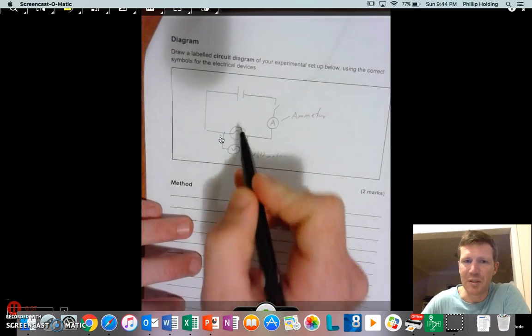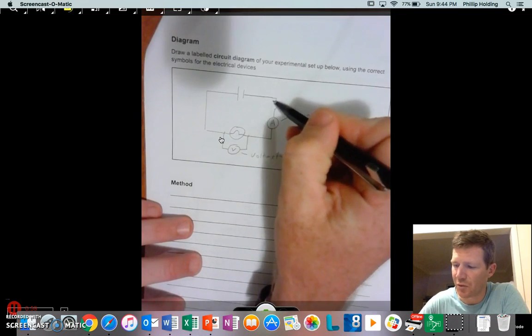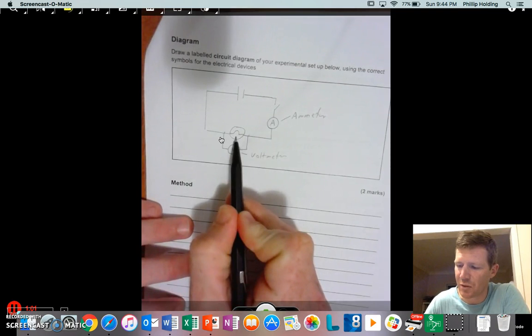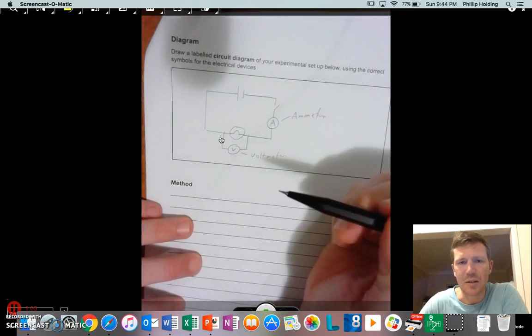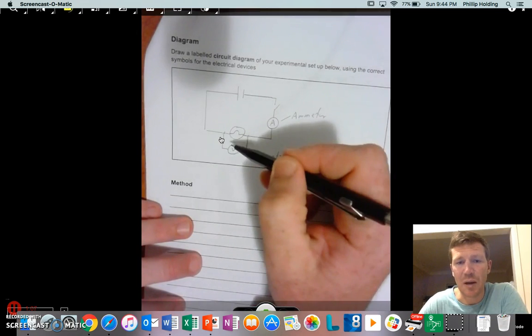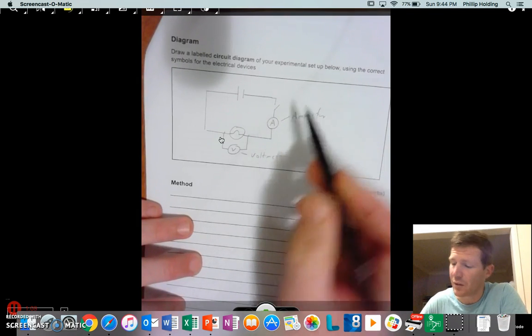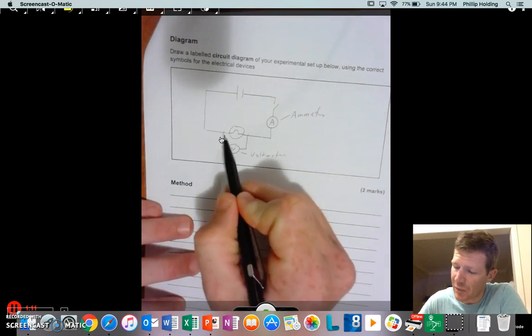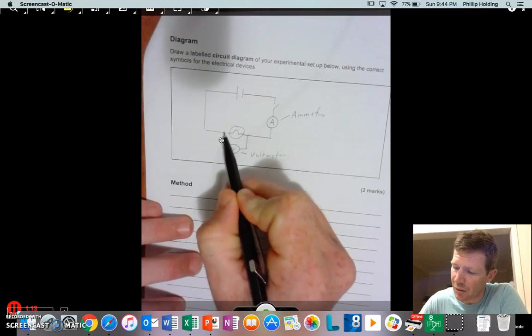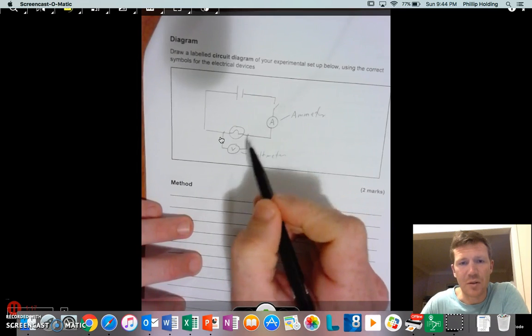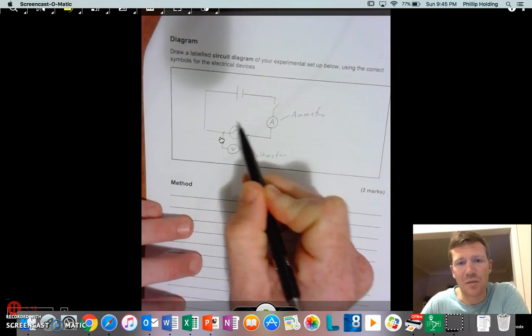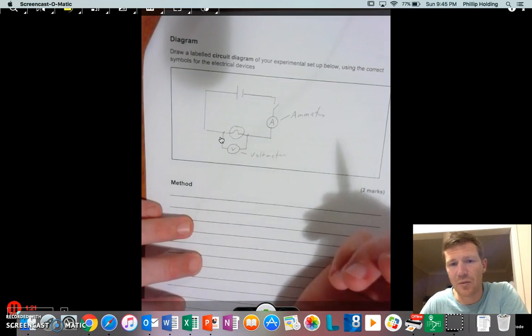And if I want to measure the voltage of a particular thing, it might be the voltage across the switch or the voltage across the globe. I need to connect it in series on either side—I mean parallel, sorry—on either side of that. So you'll notice that my voltmeter is connected in parallel with one connection on one side of the bulb and the other on the other side. So that's specifically measuring the voltage across the globe, or the potential difference.